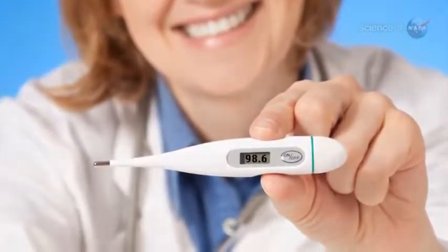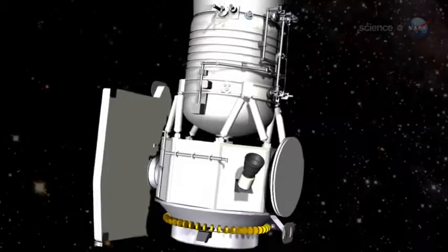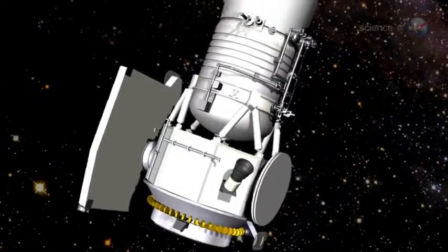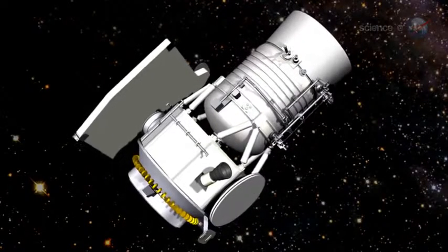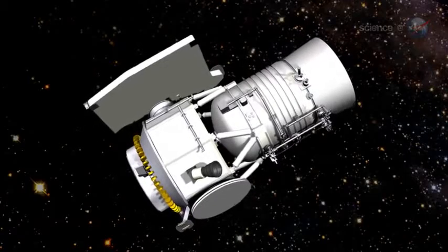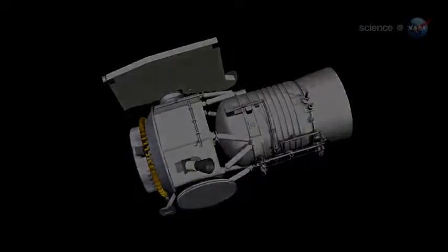They're called Y-dwarfs. A NASA space telescope named WISE made the discovery. WISE is short for Wide Field Infrared Survey Explorer. It's an infrared observatory whose recently concluded mission was to scan the heavens at wavelengths the human eye cannot see.